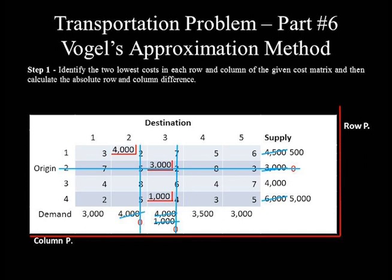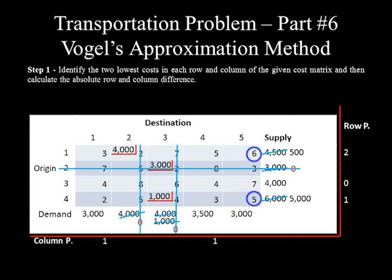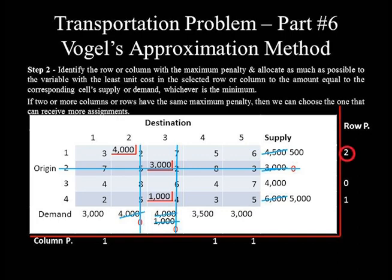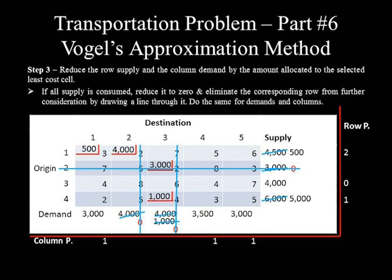Recalculating penalties for the 3 undeleted rows: row 1 is 5 minus 3 equals 2; row 3 is 4 minus 4 equals 0; row 4 is 3 minus 2 equals 1. Column 4 penalty is 4 minus 3 equals 1; column 5 penalty is 6 minus 5 equals 1. The maximum penalty is 2, so row 1 is chosen to receive the next assignment. The least unit cost in row 1 is 3, and the smaller of corresponding demand and supply is 500, which is allocated to that cell.